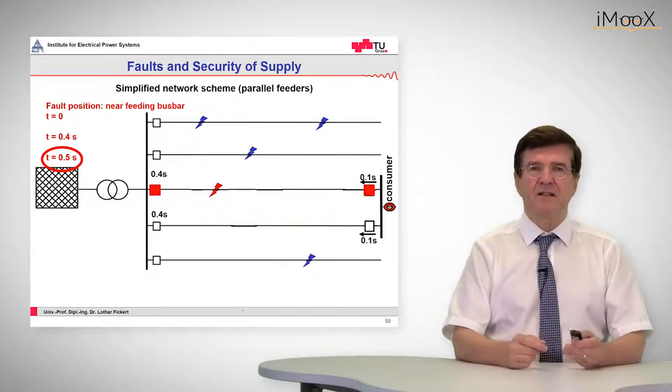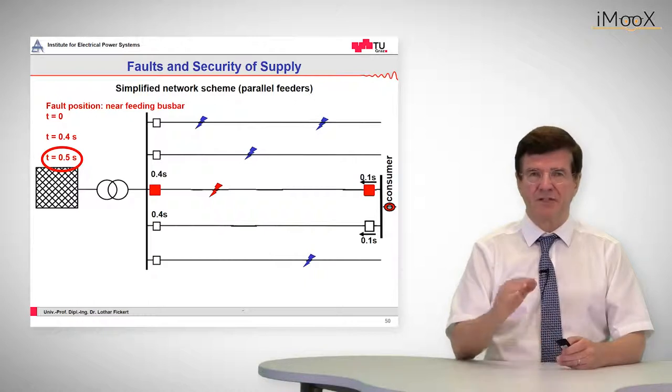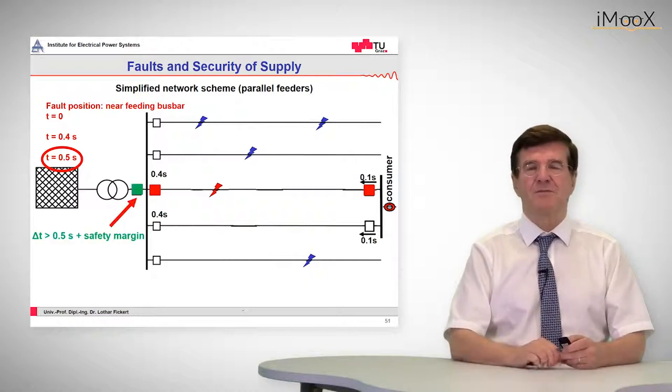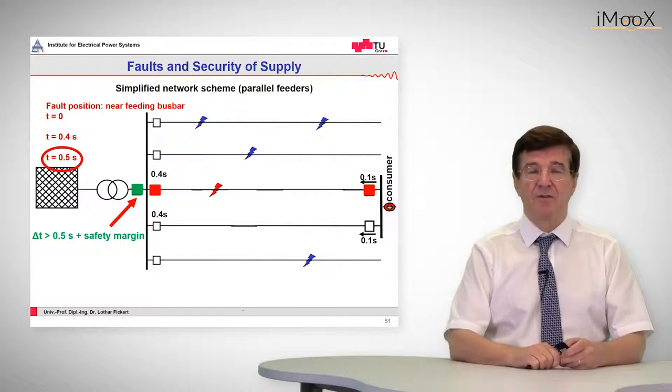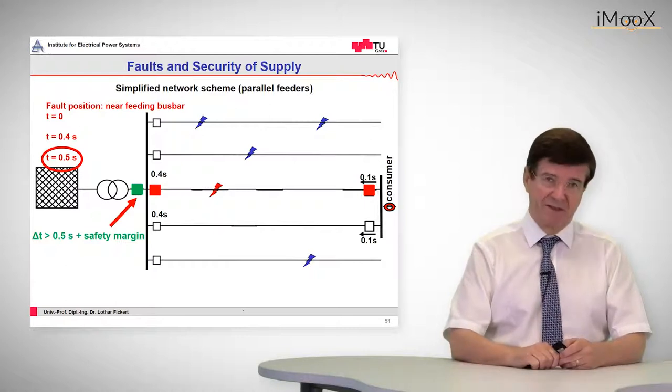So this may look as a small increase in tripping time, but when it comes to the backup function, we must take care that also the backup function will take of this possible situation. So that means the basic tripping time is not given by 0.4 seconds, but 0.5 seconds, plus the grading margin, as was indicated before.